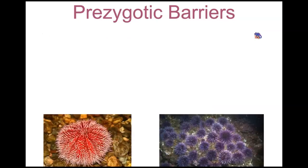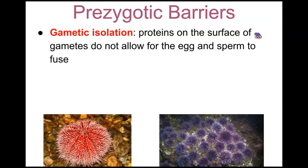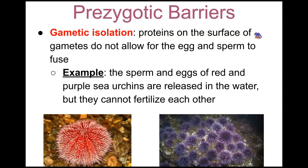Lastly, gametic isolation. An example: proteins on the surface of gametes do not allow for the egg and sperm to fuse. The sperm and eggs of red and purple sea urchins are released into the water — known as broadcast spawning — but they cannot fertilize each other because they have a special protein on their gametes' surface that will not allow gametes from one species to mix with gametes of another species.